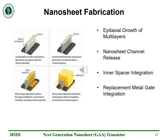Now let's see the four main steps of nano-sheet fabrication. In the first step, multiple layers of silicon and silicon germanium are epitaxially grown on top of a silicon substrate to define the channel. The silicon germanium layer is the sacrificial layer, as it will be removed during channel release. In the second step, nano-sheets are separated by selectively etching away the silicon germanium part of the multi-layer. The third step is inner spacer integration, where inner spacers made of dielectric material isolate the gate from the source and drain. In the final step, a wrap metal is deposited and patterned around and in between the nano-sheet layers to build a metal gate.